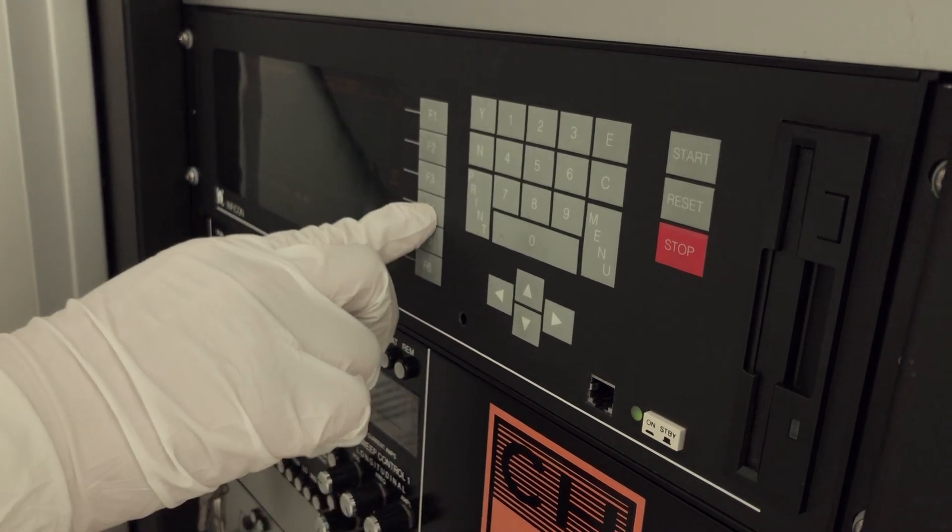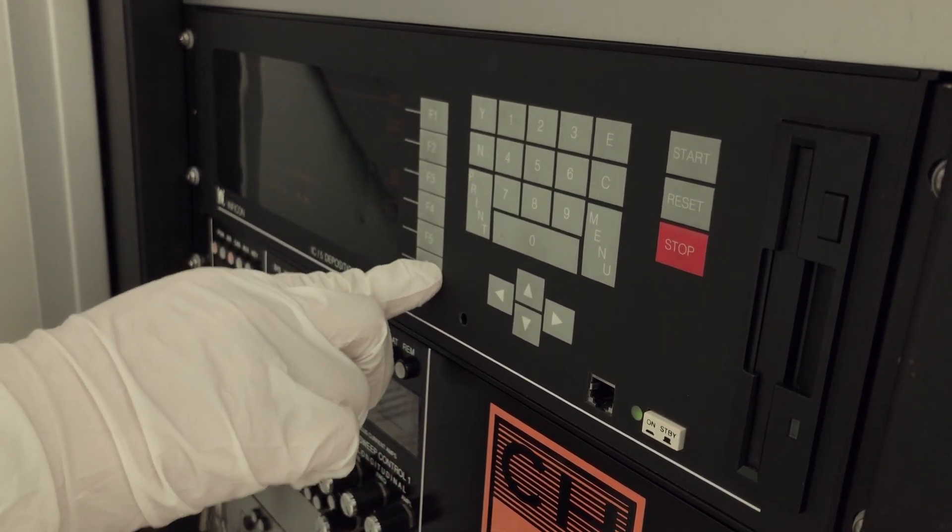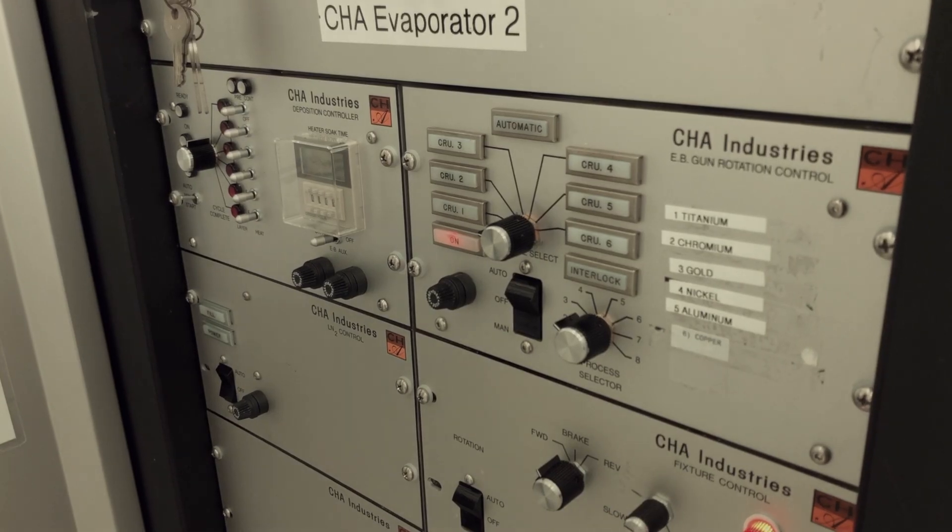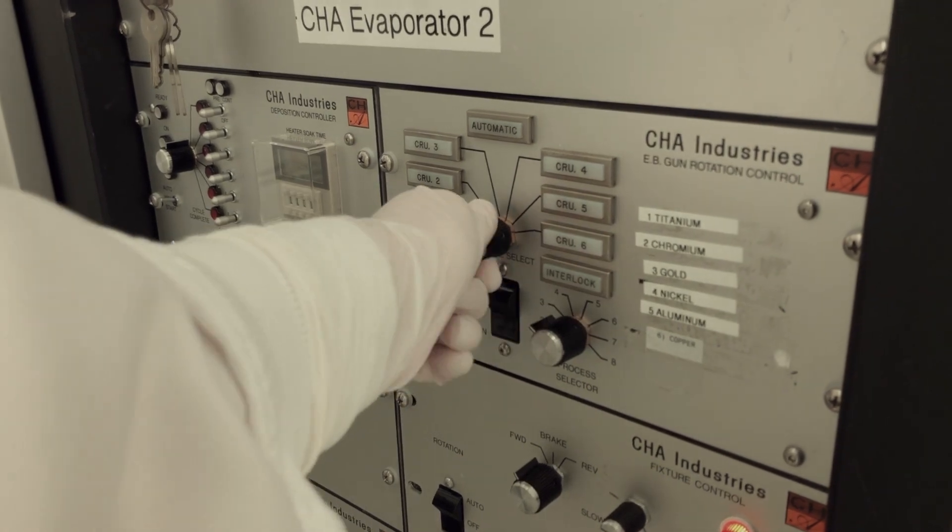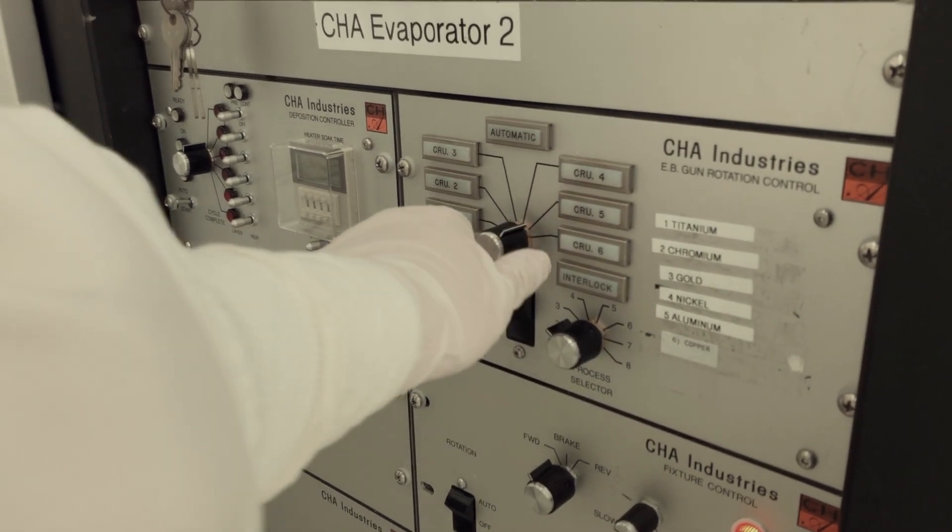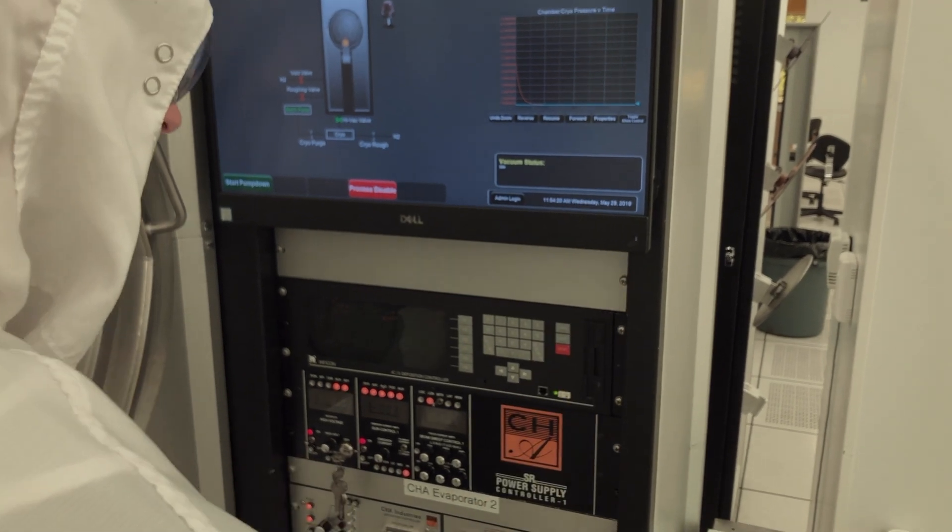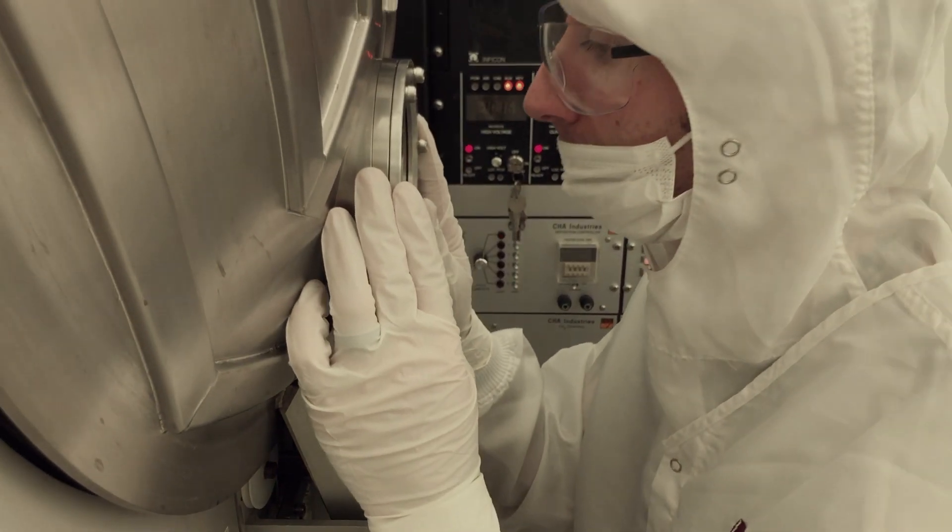Highlight the metal you want to evaporate next and press F4 for select active, then press F6, operate. Once your process has been selected, manually switch to the crucible that you want for your second layer. Once the process has been set up, press start on the deposition controller to begin running the process.